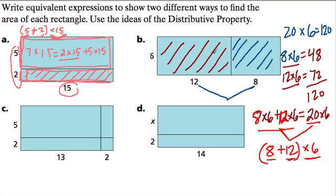And all the distributive property is saying is look at this picture. This whole 20 by 6 rectangle is equal to 8 by 6 plus 12 by 6. It's two smaller rectangles.